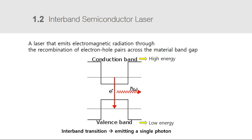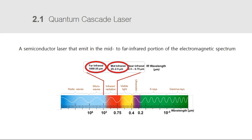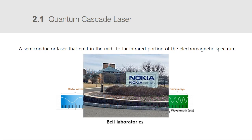What we are interested in — the quantum cascade laser — does not use bulk semiconductor materials, and its electrons undergo inter-sub-band transition, not inter-band transition. Quantum cascade lasers, or QCLs for short, are semiconductor lasers that emit in the mid-to-far infrared portion of the electromagnetic spectrum. They were first demonstrated by researchers at Bell Laboratories, including Federico Capasso and Deborah Sivco, in 1994.